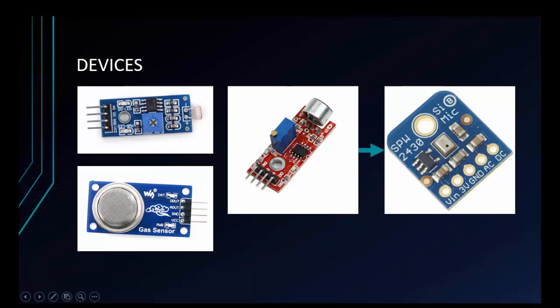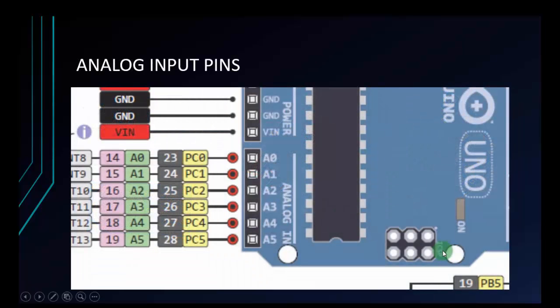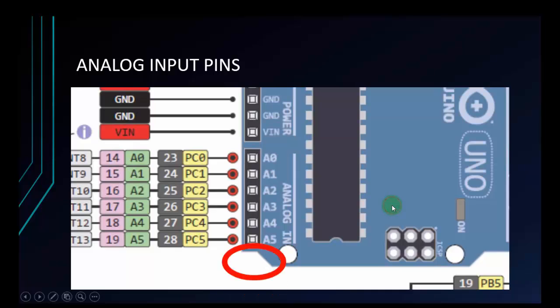Let me review a little bit. There are 6 pins to read analog on Arduino UNO, and in this video I will just use the A0 pin to read analog signal.